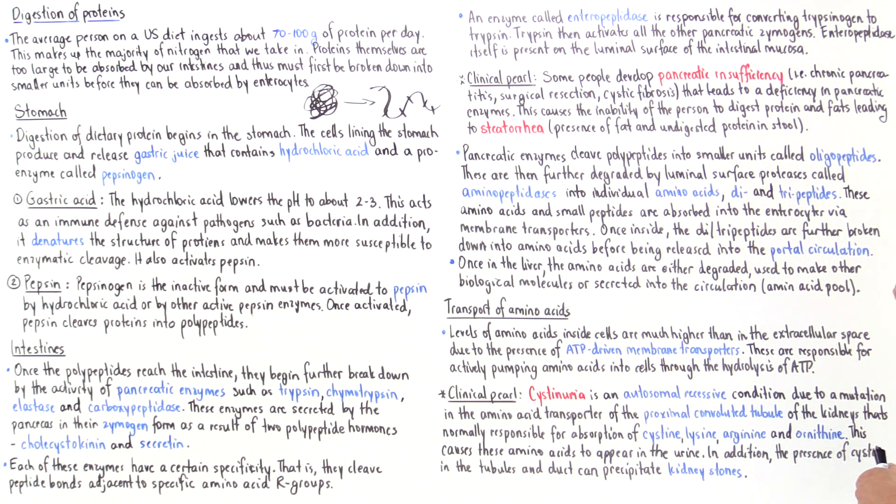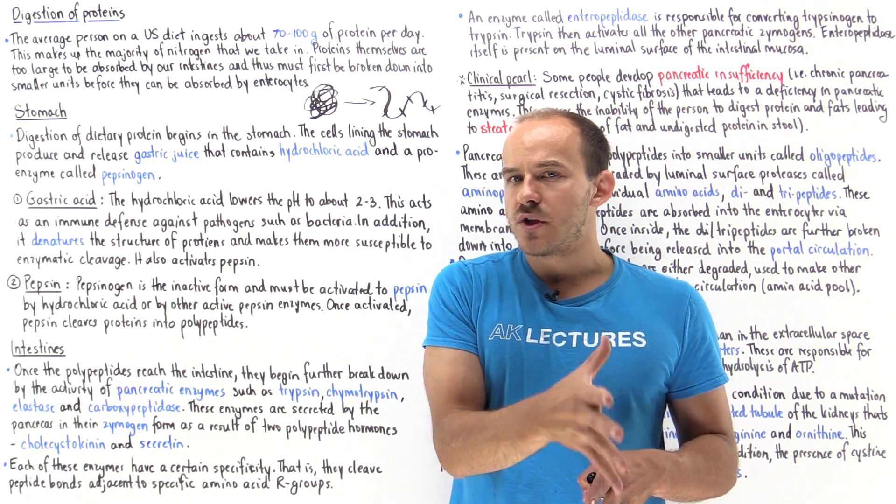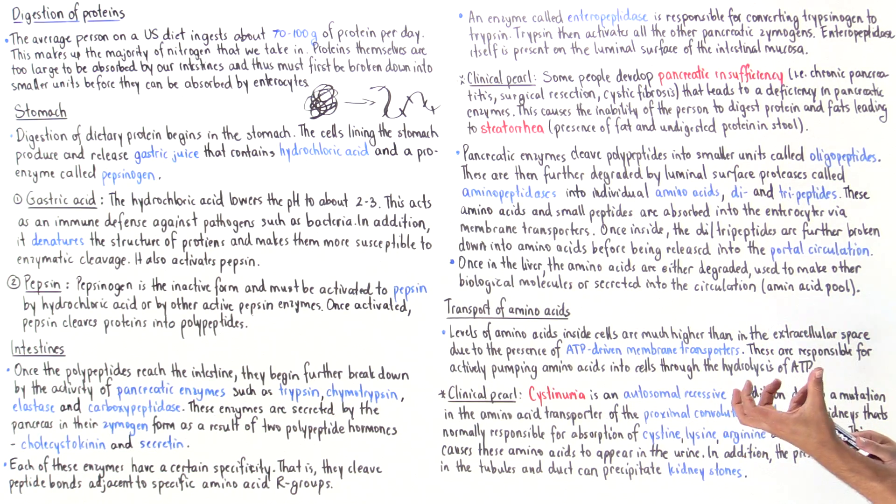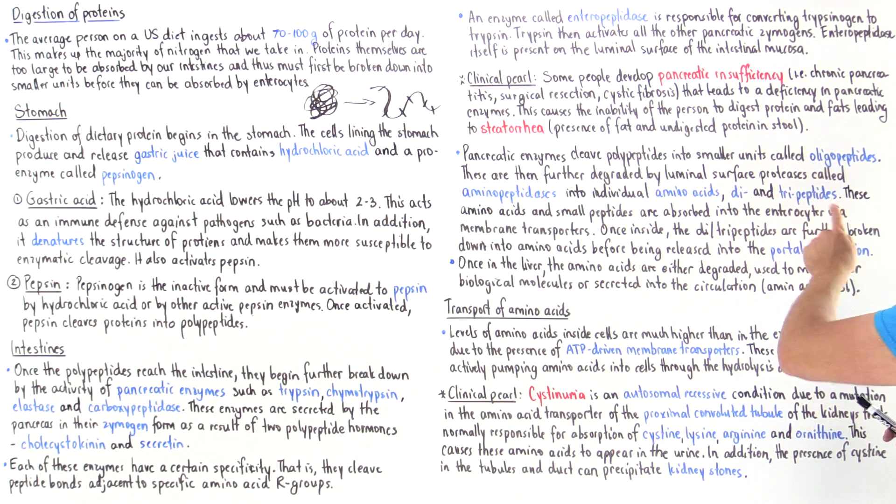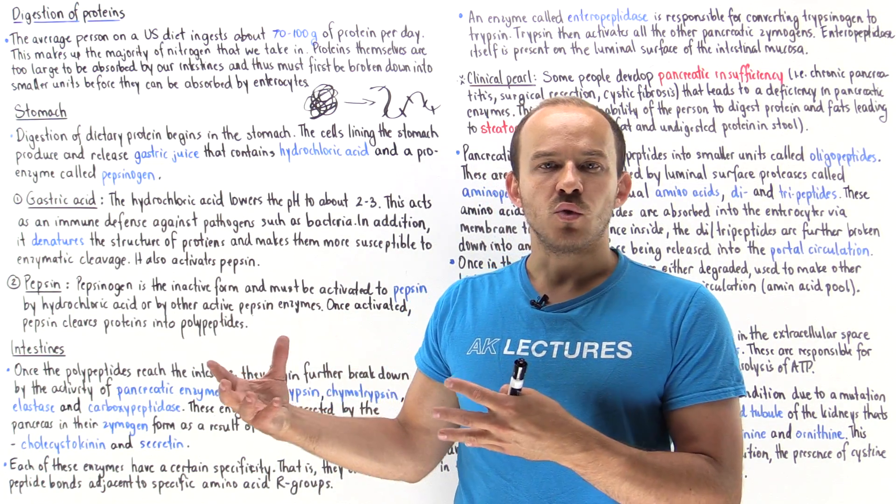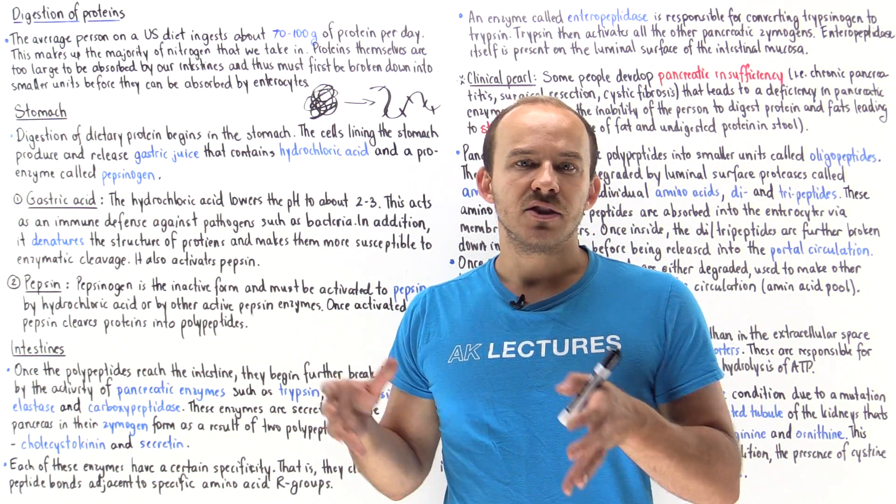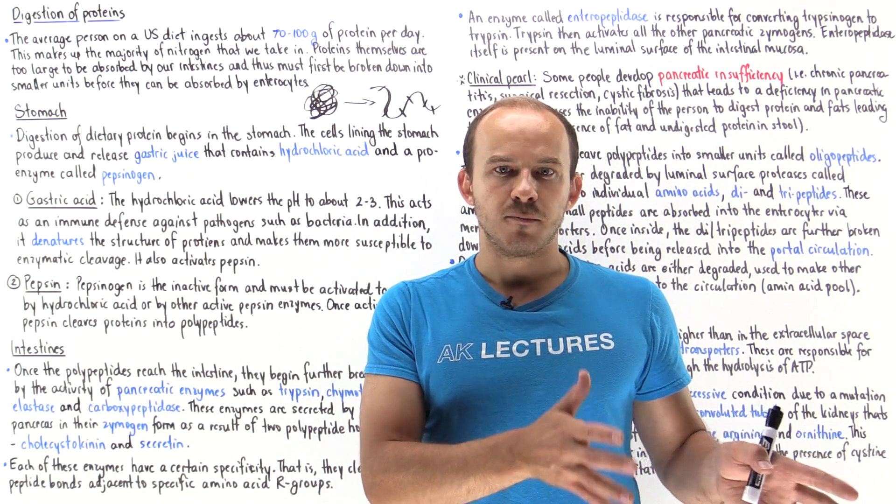Once we form these amino acids, dipeptides, and tripeptides, now the enterocytes use specialized membrane transporters to actually move those amino acids and di- and tripeptides into the cell. Once the di- and tripeptides are within the cytoplasm of the enterocytes, that's when we further break them down into their individual amino acid form. Then those amino acids are released into the portal circulation.